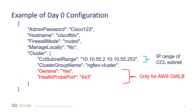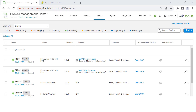This is an example of the day zero configuration, which applies to the public cloud. You can see standard bootstrapping information like the password and hostname, firewall mode. But in addition, there are a few lines important for the cluster, including the cluster subnet range. These are all the potential IP addresses used by the cluster — typically the entire subnet — so that you can use DHCP on that subnet.